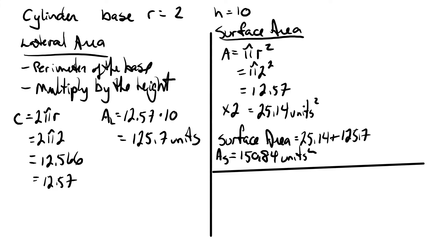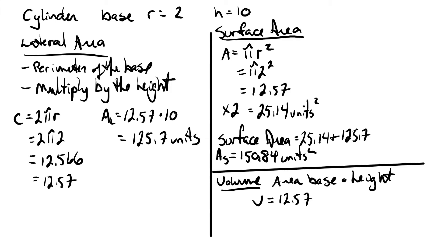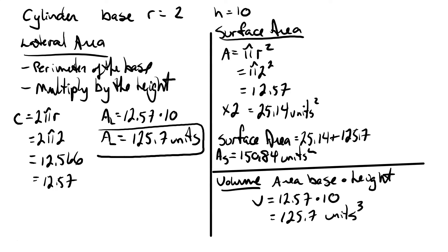Finally we'll calculate the volume. Volume equals the area of the base multiplied by the height. We already found the area of the base was twelve point five seven, and we multiply that by the height of ten, so the volume is one hundred and twenty five point seven cubic units. To recap, we have our lateral area, surface area, and total volume.